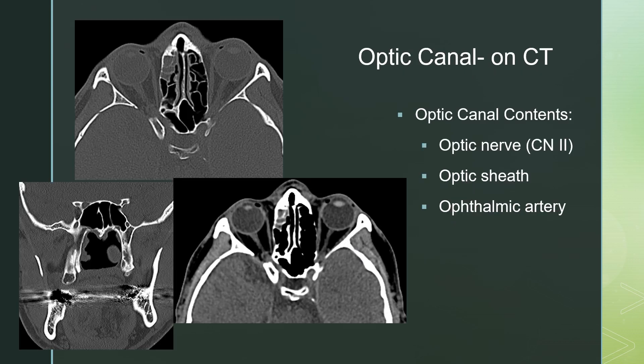We'll start with the optic canal. The contents are cranial nerve 2, the optic nerve, the optic sheath, and the ophthalmic artery. On CT imaging, you're looking for that space between the anterior clinoid process and the posterior ethmoid air cells slash sphenoid air cells, where you see the optic nerve extending.